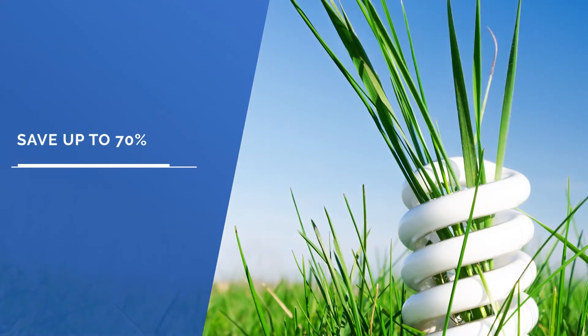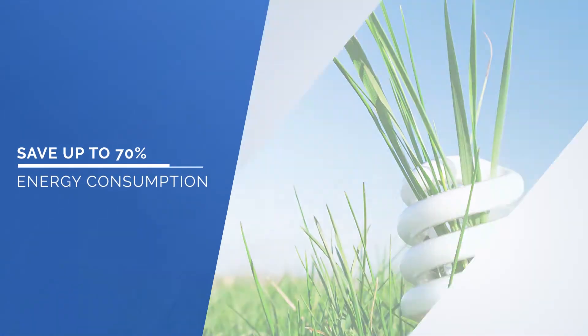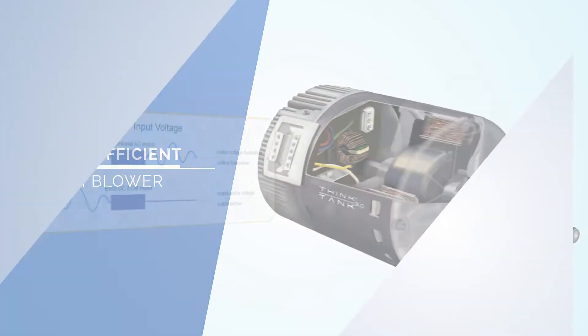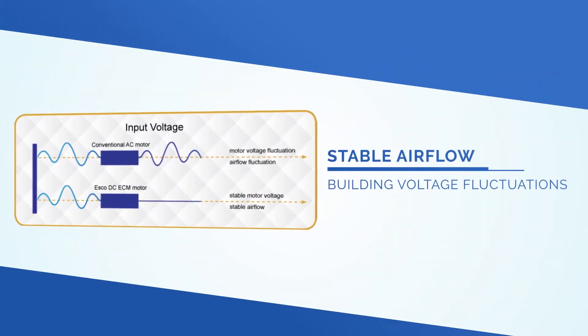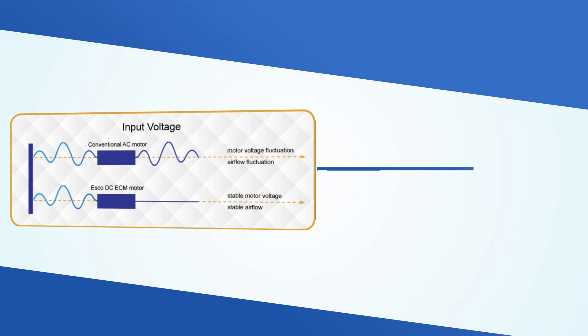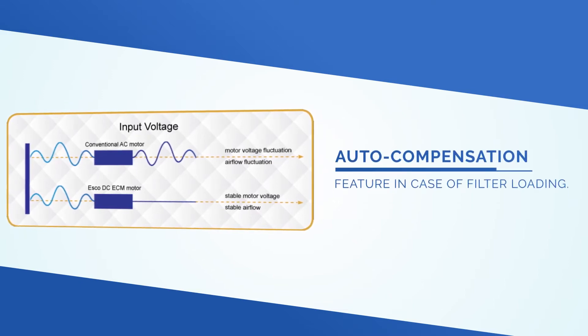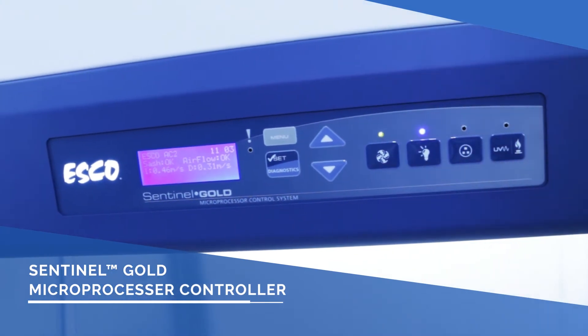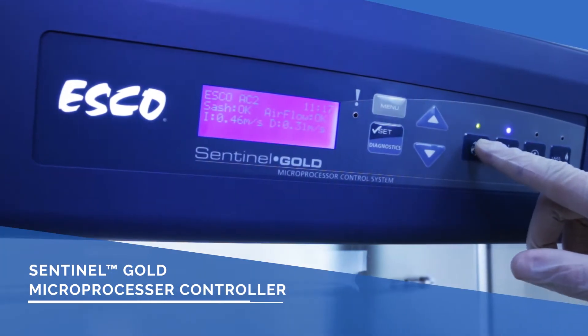Save up to 70% of your energy consumption with the energy-efficient DC ECM Blower, which also provides stable airflow despite building voltage fluctuations and auto-compensation in case of filter loading. The Sentinel Gold Microprocessor Controller comprehensively displays all safety information in one screen.